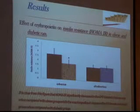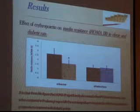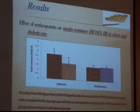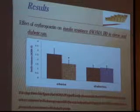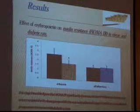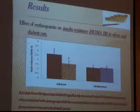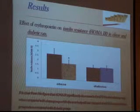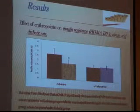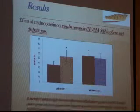Regarding insulin resistance, it is clear from this figure that insulin resistance significantly decreased in the erythropoietin-treated obese group when compared with the obese group, while there was a significant change in the erythropoietin-treated diabetic group when compared with the diabetic group.